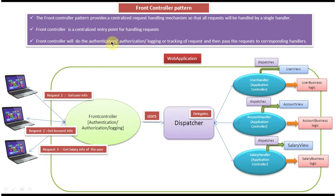This is the way the Front Controller design pattern works. Now if you read the above explanation you can understand it very easily. The Front Controller provides centralized request handling — all requests come to the Front Controller. It is the entry point for all requests, performing common functionalities like authentication, authorization, logging, and tracking. Once everything is fine, it passes the request to the handlers via the Dispatcher. Thanks for watching, bye bye.